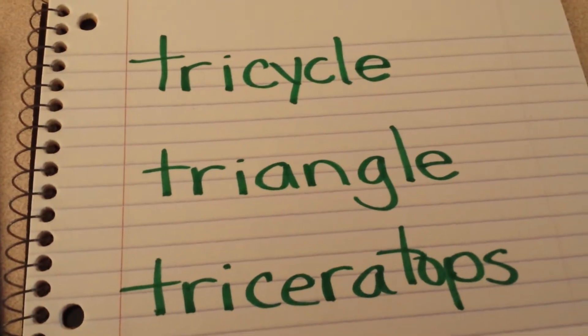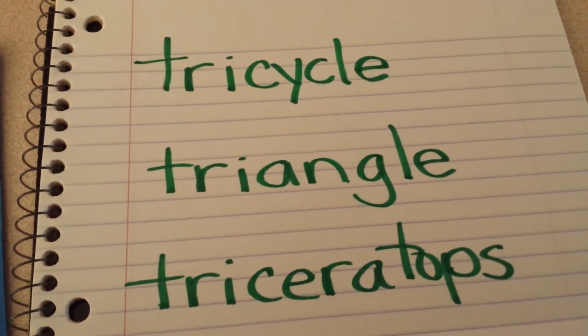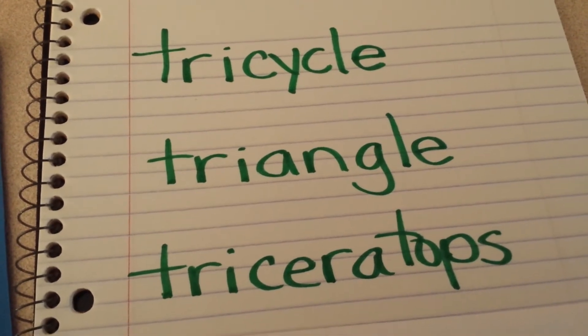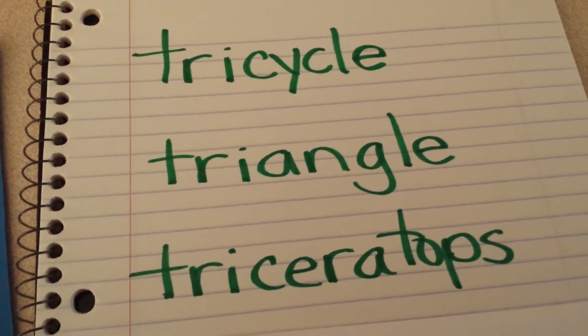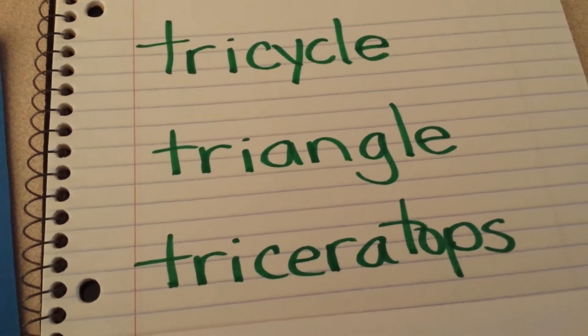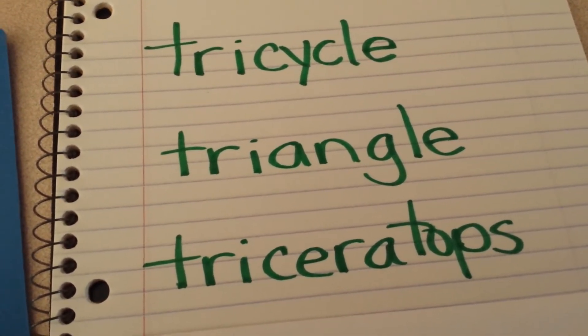The first word is a tricycle. Do you know what a tricycle is? A tricycle is something you ride, and how many wheels does it have? Three. A triangle, that's the second word, is a shape. How many sides does the triangle have? Three.